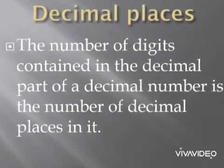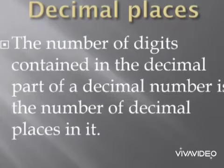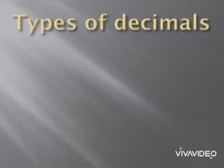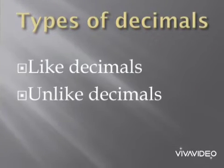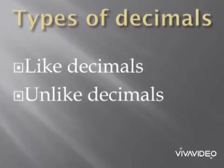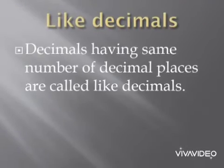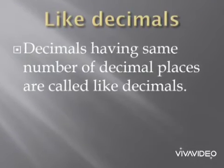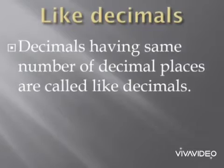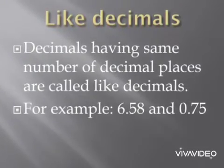There are two types of decimals: like decimals and unlike decimals. Like decimals are decimals having the same number of decimal places. For example, 6.58 and 0.75.